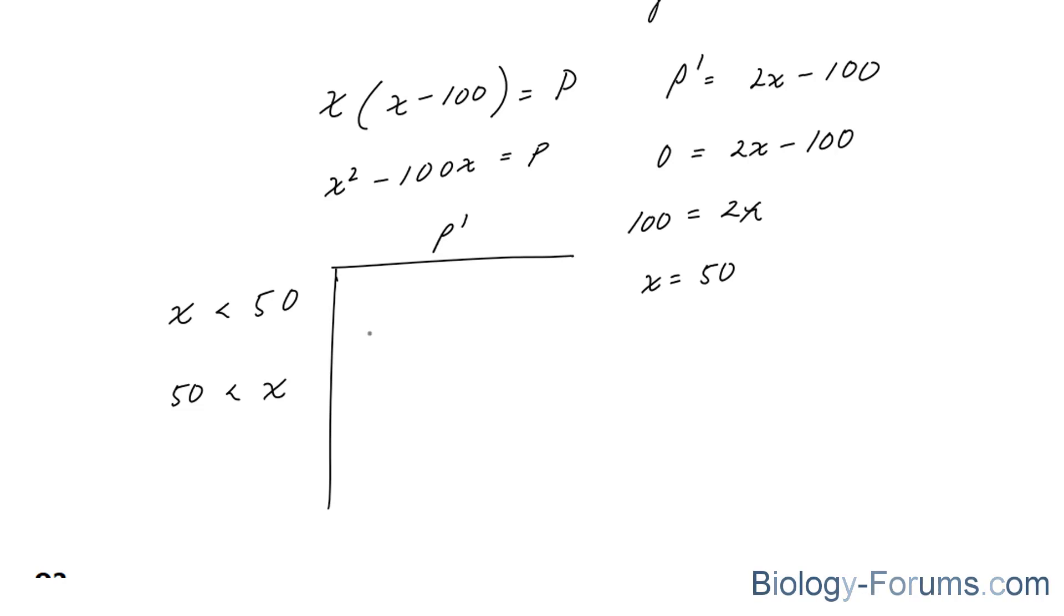So let's choose a number that's less than 50. Let's choose 0. If I put 0 into my derivative, I end up with a negative number. And if I put a number greater than 50 into my derivative, I end up with a positive number.